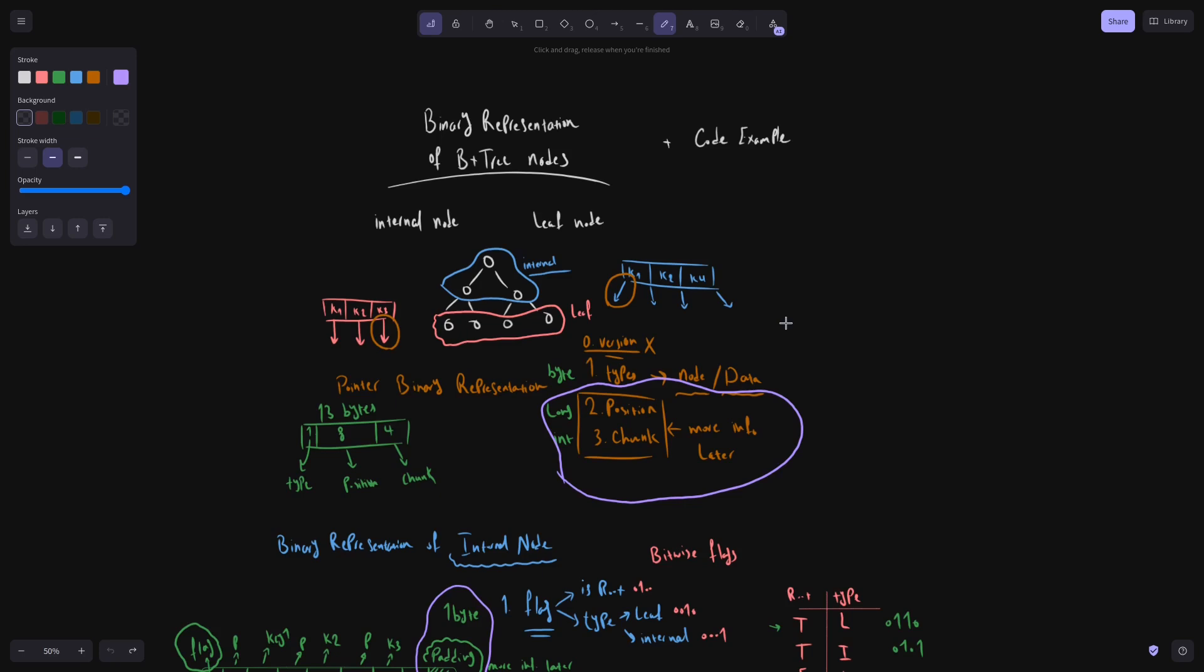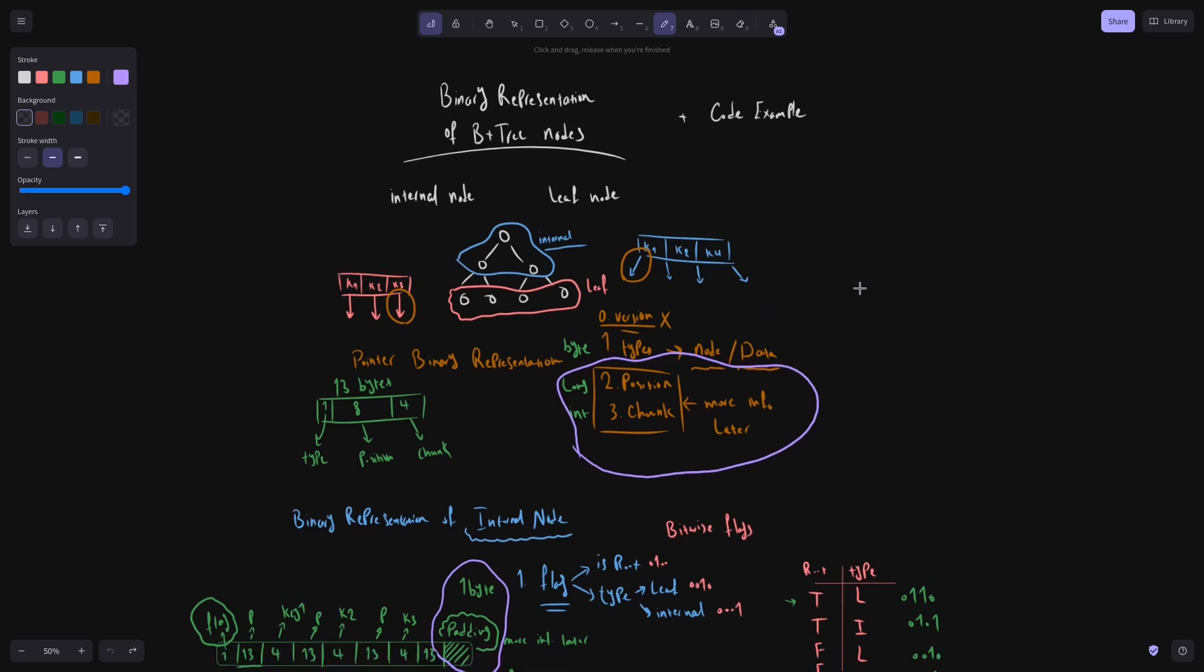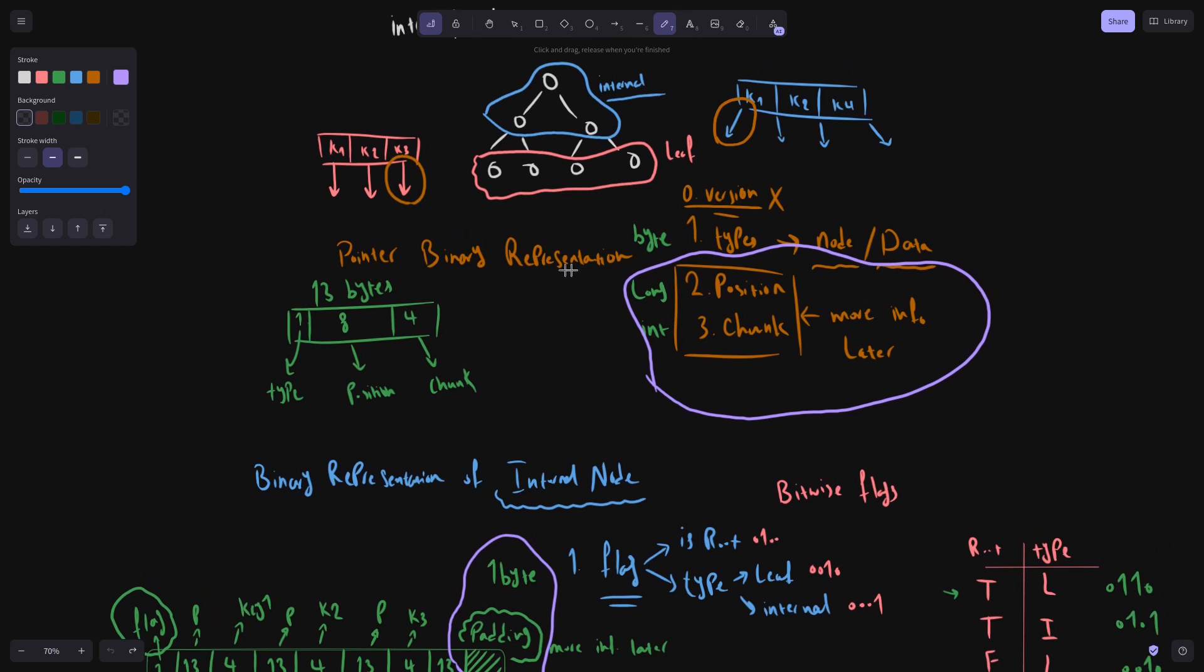Welcome back. In previous video, we saw binary representation of B plus tree nodes and some code examples. We first understood pointer binary representation. My implementation of a pointer is 13 bytes, it has a type, a position and a chunk, which we will understand what the position and the chunk is in this video.